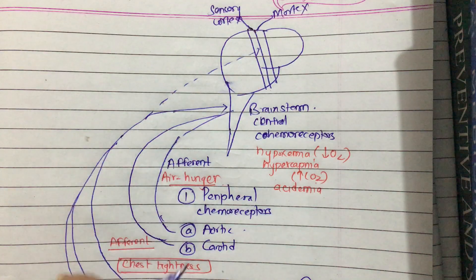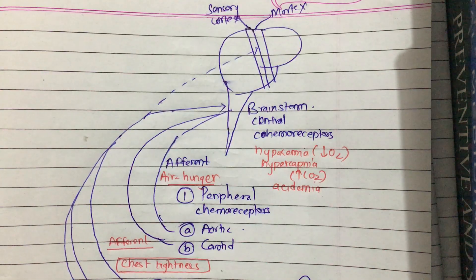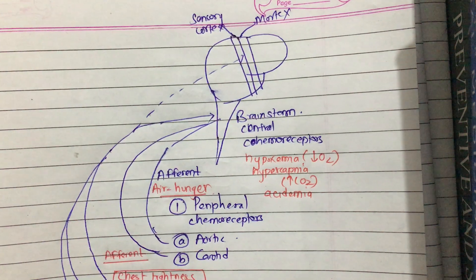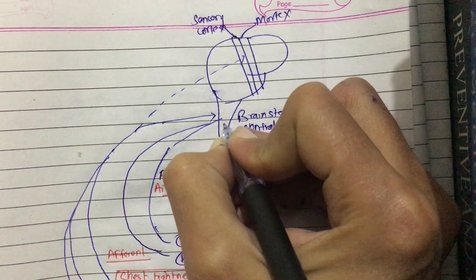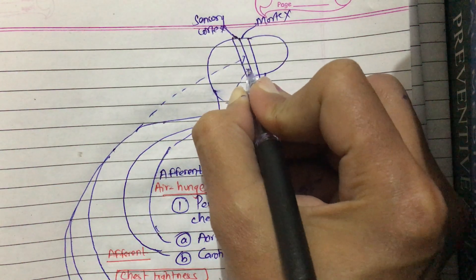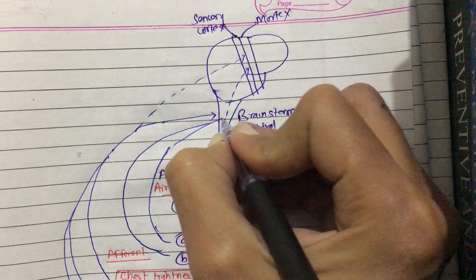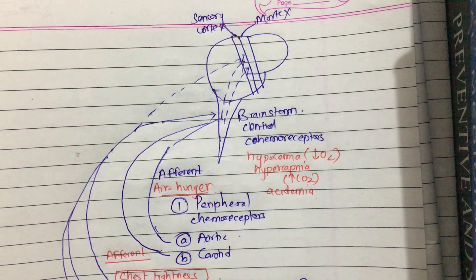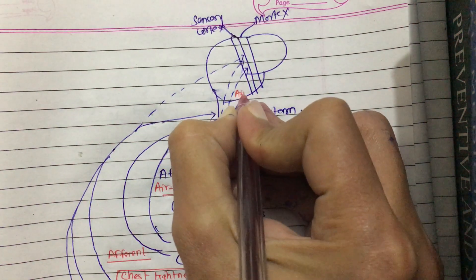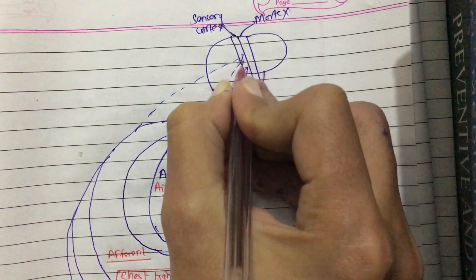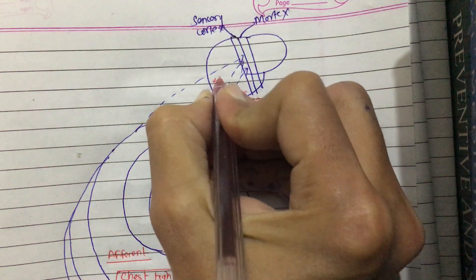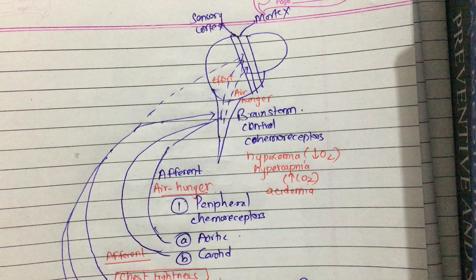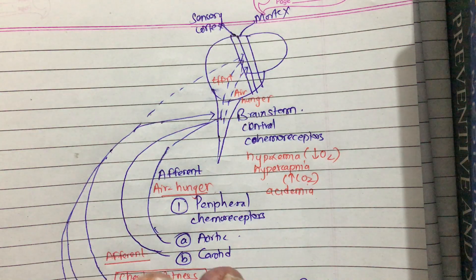These mechanoreceptors take sensory information to the brainstem and the sensory cortex. The information taken to the sensory cortex makes us conscious about air hunger. Some afferent signals also travel from the brainstem to the sensory cortex, and this makes us aware of air hunger. When these afferent signals are carried to the sensory cortex, we realize the air hunger and the breathing effort.